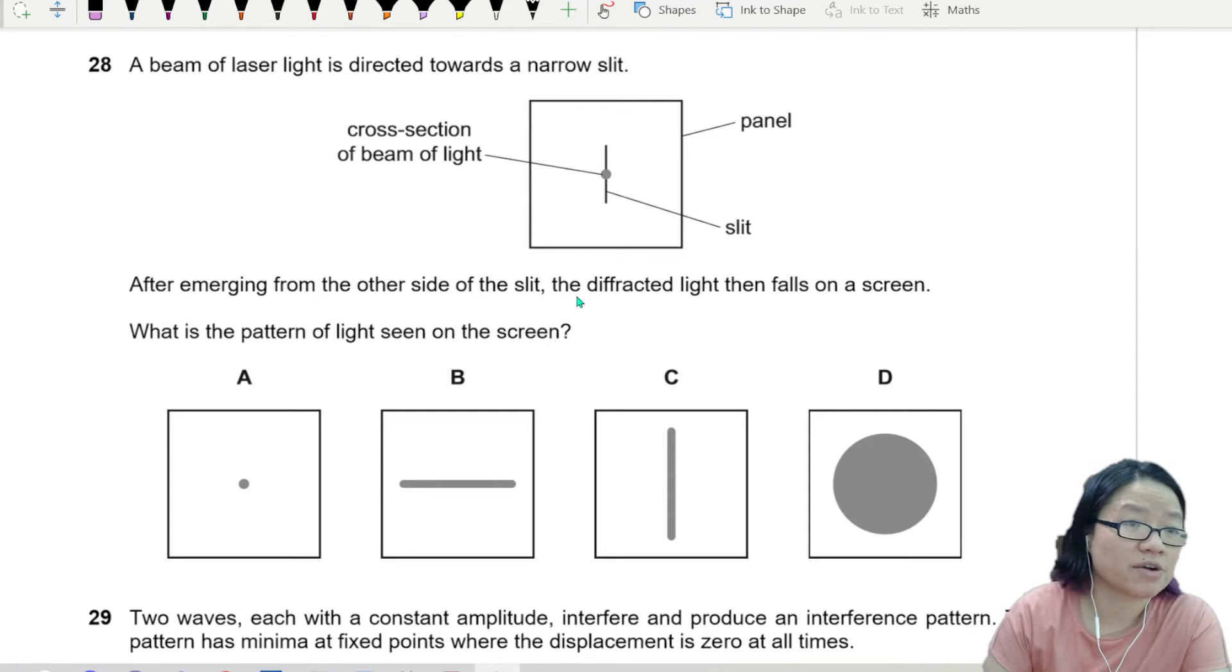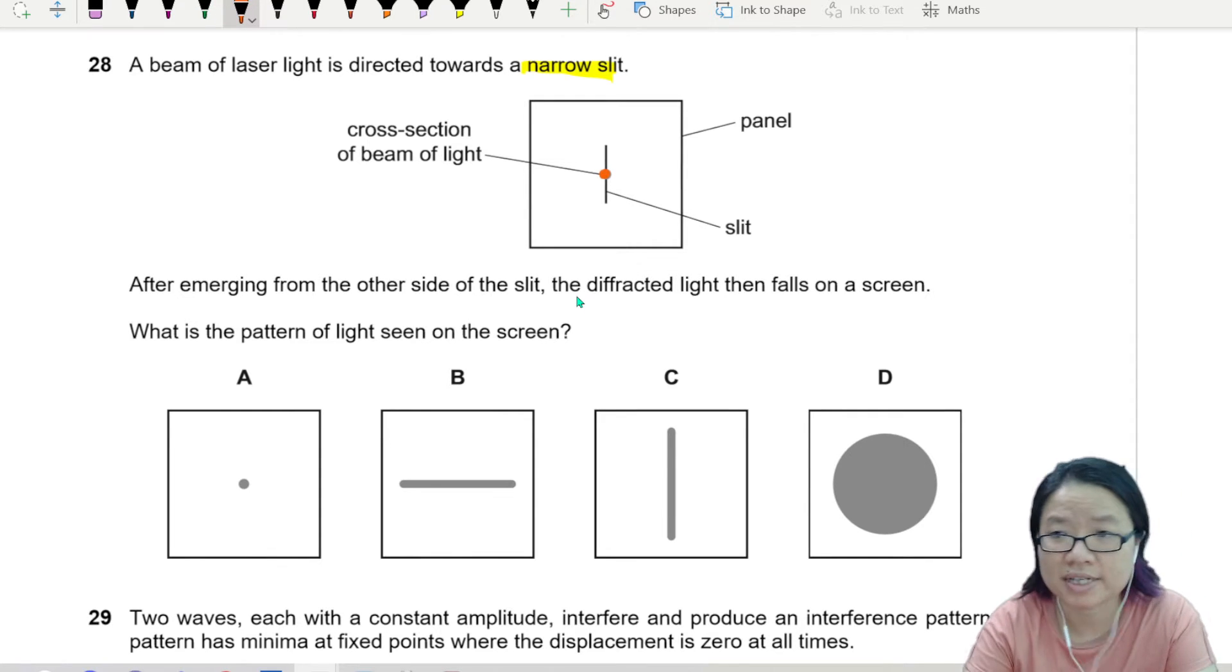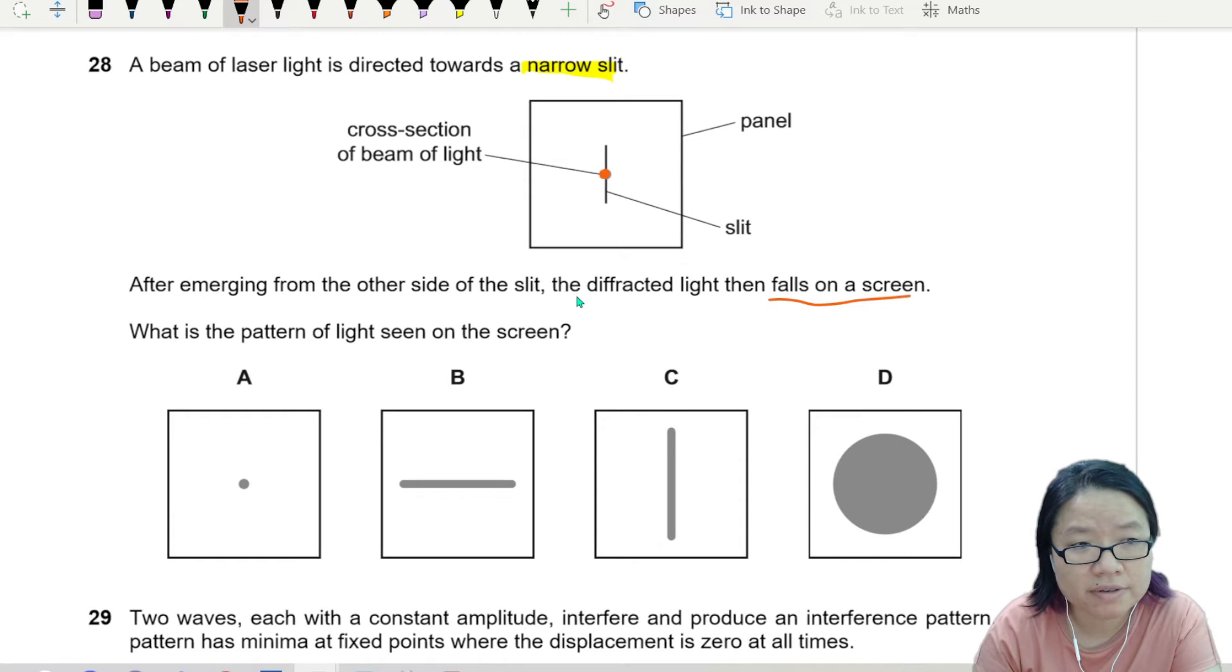A beam of laser light is directed towards a narrow slit. We're going to shine a light through this dot, passing through the slit. After emerging from the other side of the slit, the diffracted light then falls on a screen. So what is the pattern seen on the screen?